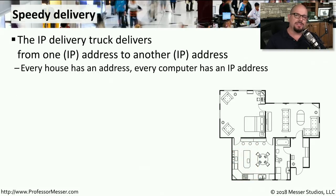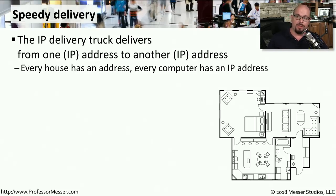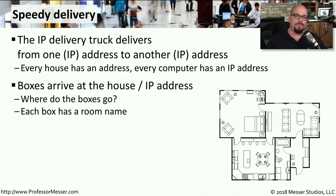Now let's look at how we get the box from one location to another — that's done using IP, the Internet Protocol. Just as every house on your block has a different street address, every computer on the internet has a different IP address, so we can send information from one IP address to another. Once the boxes arrive at the IP address, we need to know which room in the house to put that box — someone looks at the label on the box and sends the mover to the correct room.